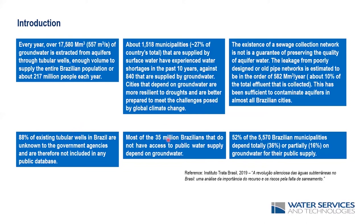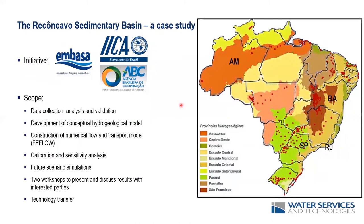About 35 million Brazilians — around 15% of the population — do not have access to public water supply and depend heavily on groundwater. Looking at the universe of municipalities in Brazil, about 50% depends either totally (36%) or partially (16%) on groundwater for public supply. That sets the scene for the study we are going to discuss today.